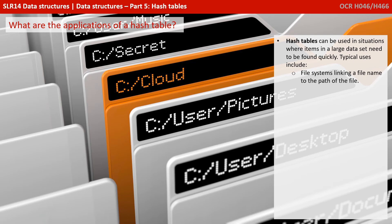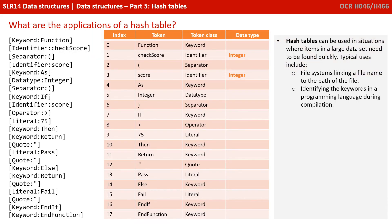Hash tables can be used in situations where items in a large dataset need to be found quickly. Typical uses include file systems linking a file name to the file path, and identifying the keywords in a particular programming language during compilation.